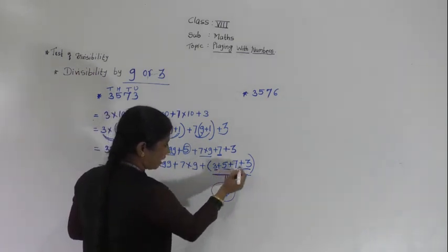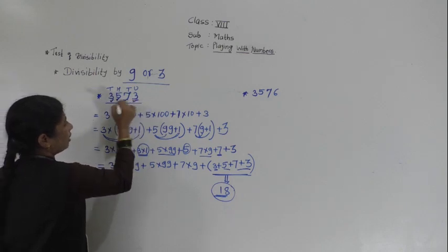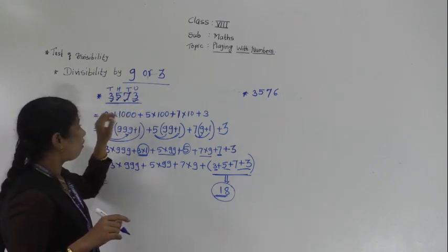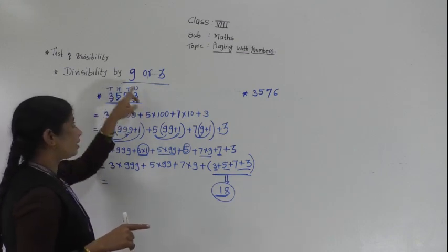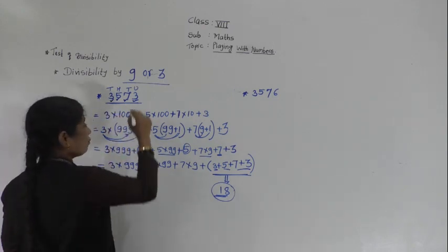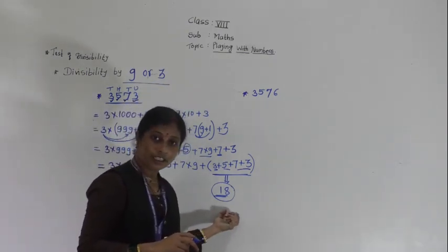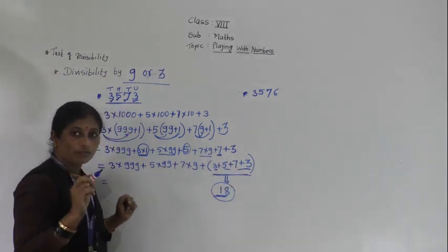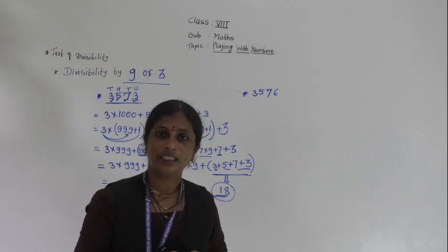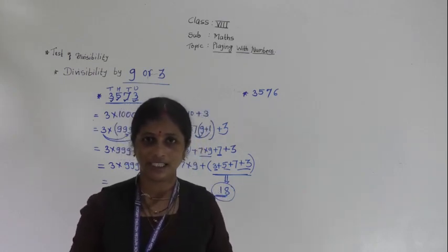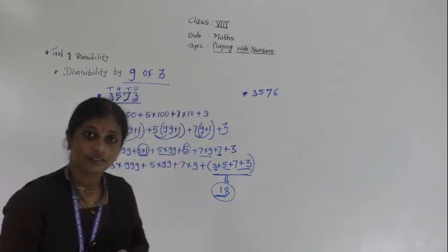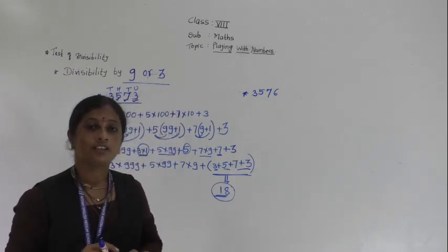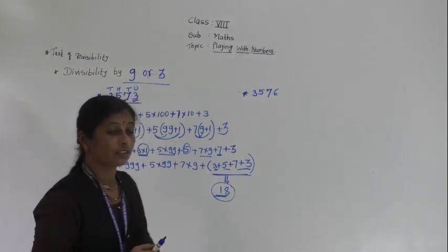The rule: when the sum of all the digits of a given number is divisible by 3 or 9, then the total number is also divisible by 3 or 9. The digits of 3573 are 3, 5, 7, 3 — their sum is 18 — divisible by both 3 and 9.